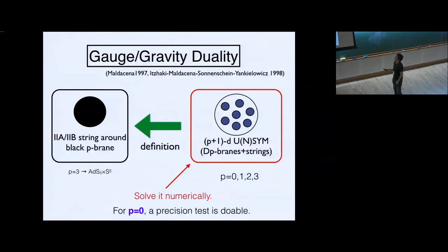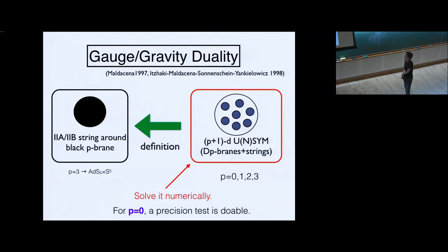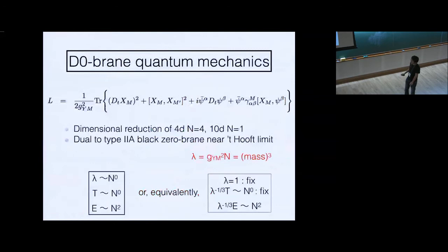If we can solve it numerically and connect the weakly coupled region of gauge theory to the strongly coupled region where supergravity is a good description, that's a generalized version of the three-quarter problem. Numerically, P=0 is the easiest case. I will explain how we can solve the three-quarter problem in the case of the zero-brane.